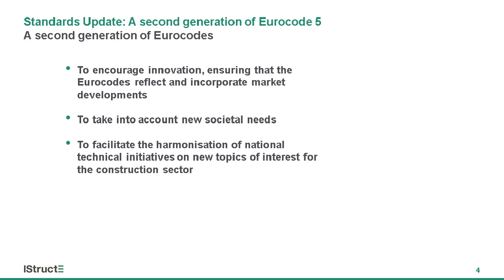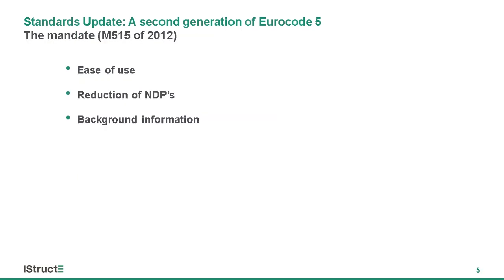In summary, we see a lot of boundaries being pushed, so the standard needs to catch up. The second generation of Eurocodes is about capturing the state of the art in line with technical achievements. The mandate called for ease of use — how easy it is for a first-time user to navigate the document and find the clauses needed for design — and also reduction of nationally determined parameters, though the latter is less of a serious issue for Eurocode 5 specifically.